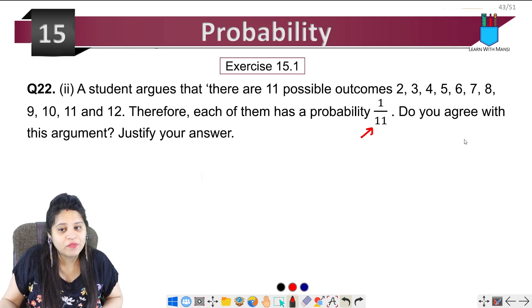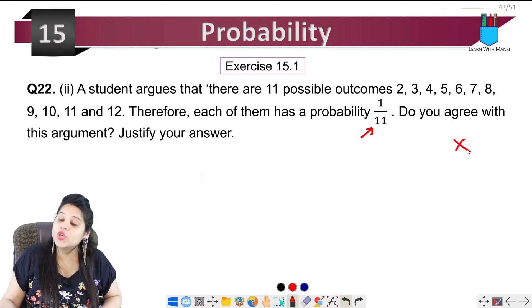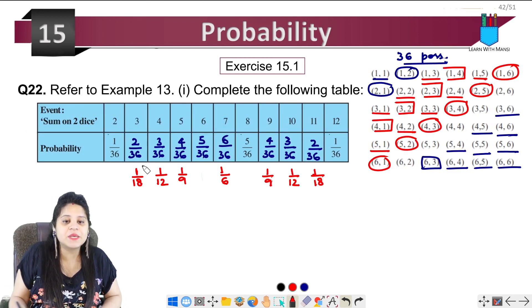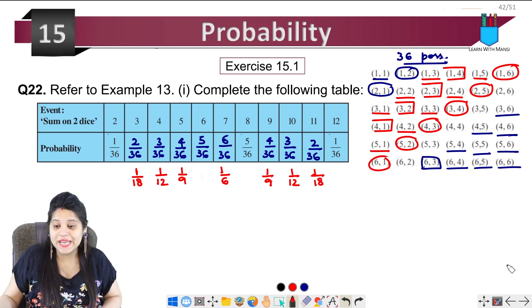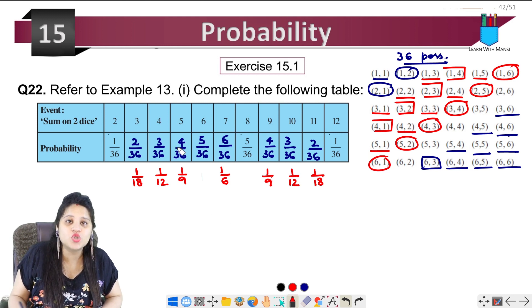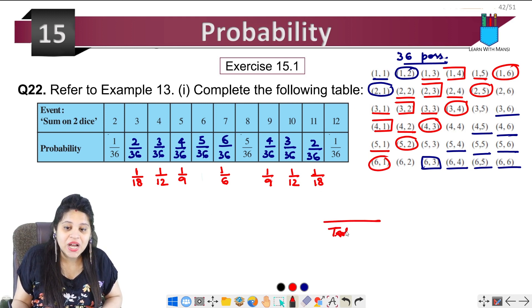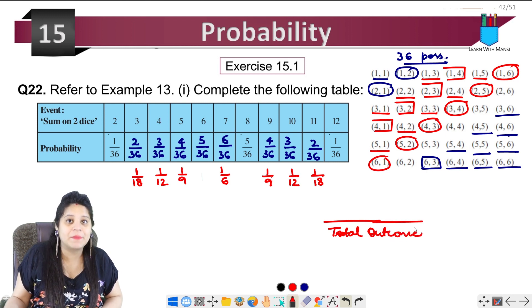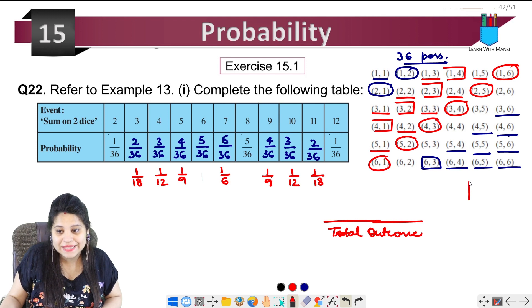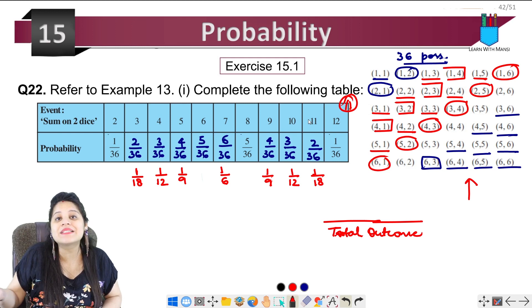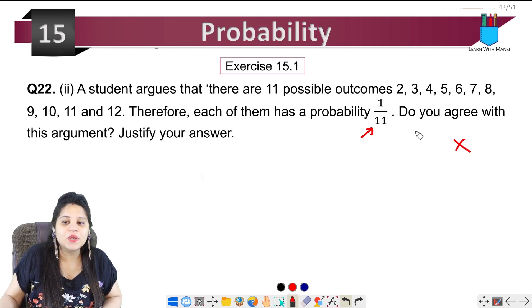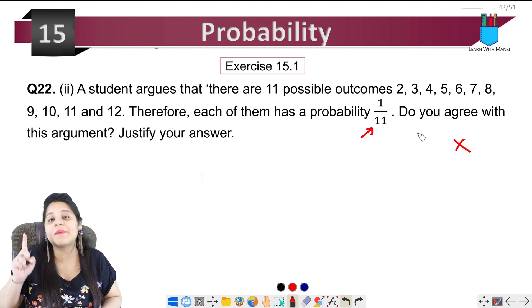Now what he says is totally wrong. Why? Because he says here look, the things we have asked there are 11 possibilities, so every person's probability 1 upon 11. But when we solve it, we have a total outcome - in this case the actual outcome is 36. It is not 11. This is not valid here because our total outcome is 36.